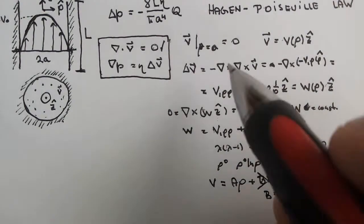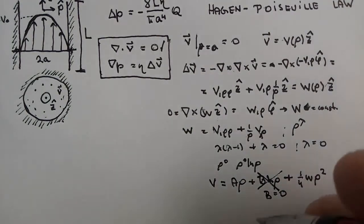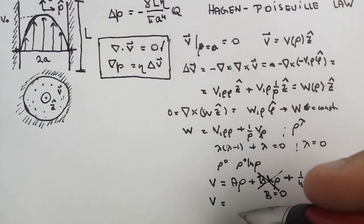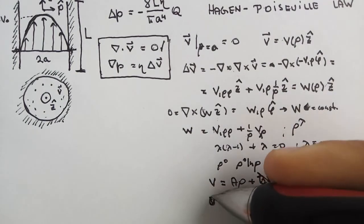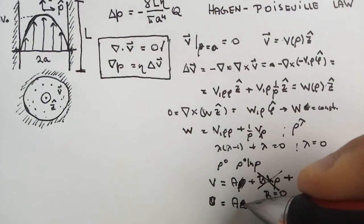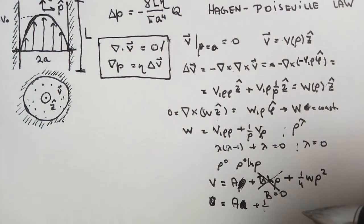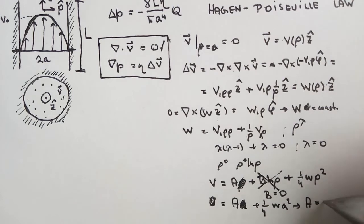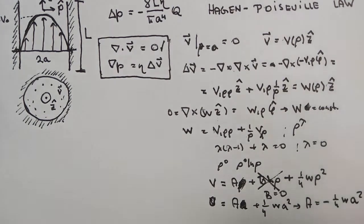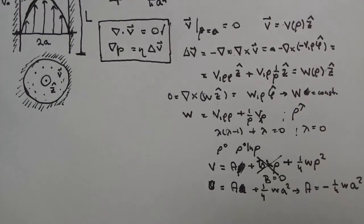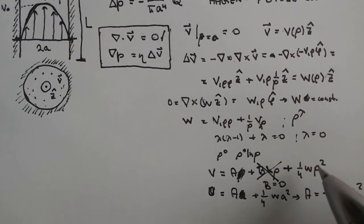Applying the boundary condition V = 0 at rho = a, we get: 0 = A + (1/4)*W*a². Therefore A = -(1/4)*W*a². Substituting back into the solution gives the velocity profile in terms of W.